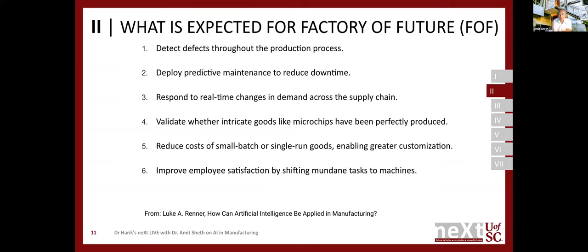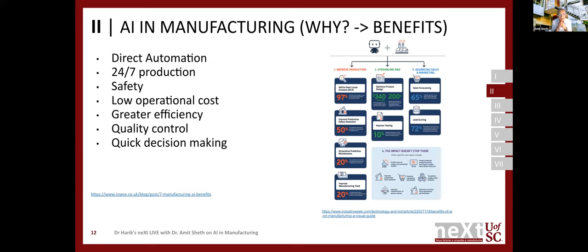What is expected of the factory of the future? Some of the components of how AI can be applied to manufacturing include: detecting defects throughout the production process, deploying predictive maintenance to reduce downtime, responding to real-time changes in demand across the supply chain, validating whether integrated goods like microchips have been perfectly produced, reducing costs of small batch or single-run goods enabling greater customization, and improving employees by shifting mundane tasks to machines.